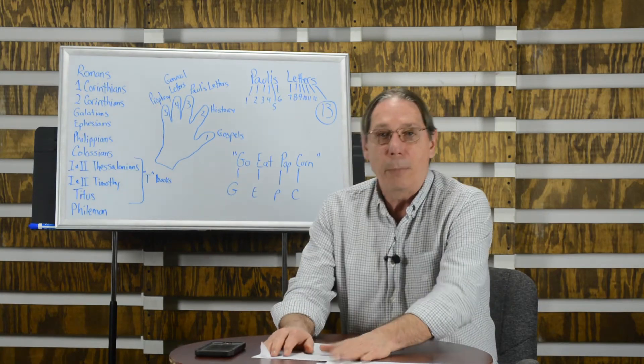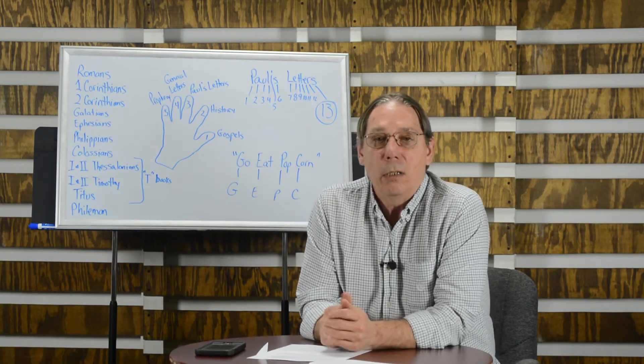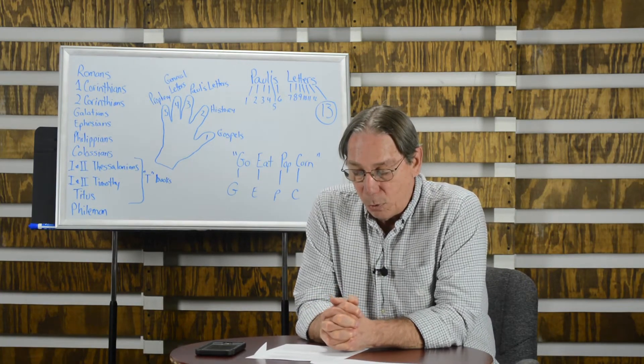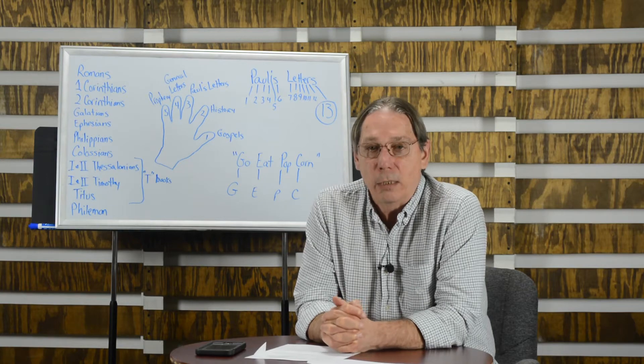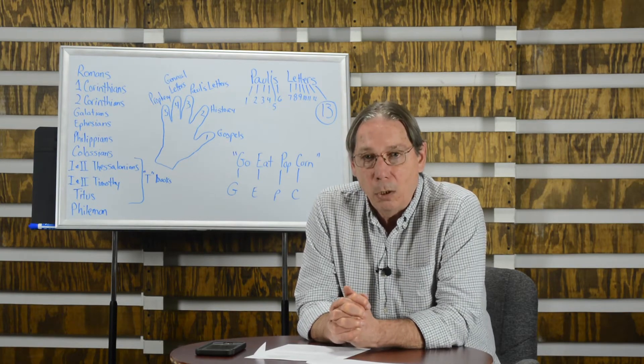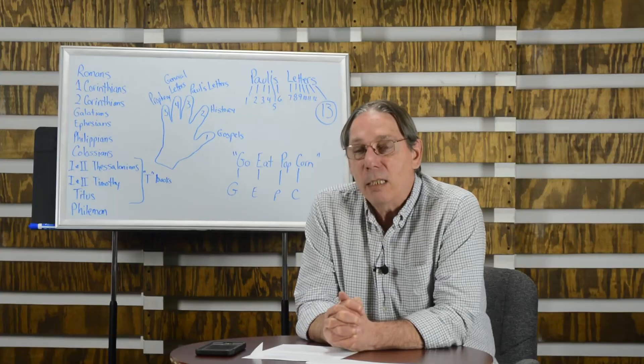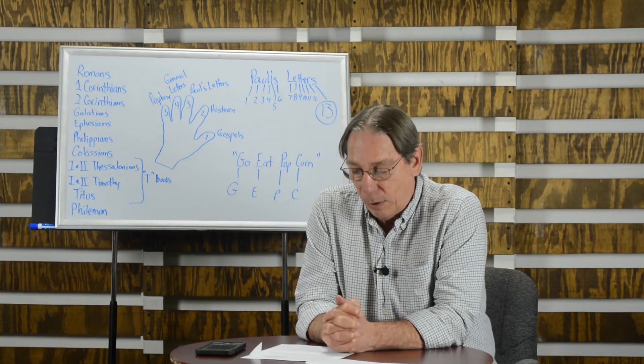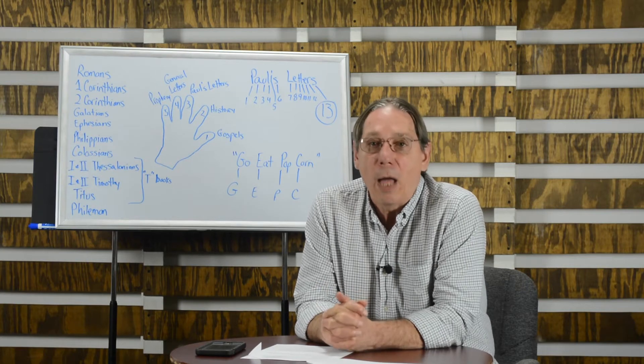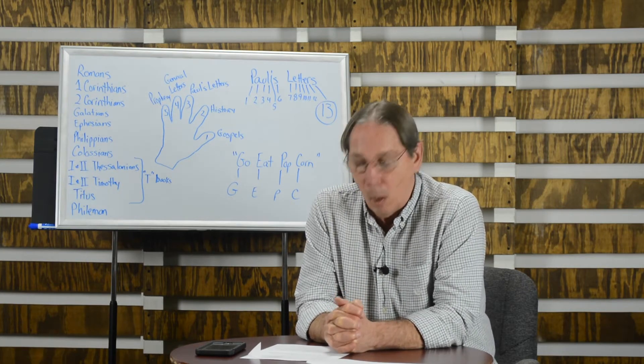Now, I want you to turn to your parents, your brothers, your sisters, whoever's there in the room with you watching and I want you to tell them the four books that make up the Gospels, the first division of the New Testament. Ready? Go. Very simple. Matthew, Mark, Luke, and John. Now, how about the second division of the New Testament? We call that history. What book is in the division of history? Very simple acts. It's just the history of the old church.